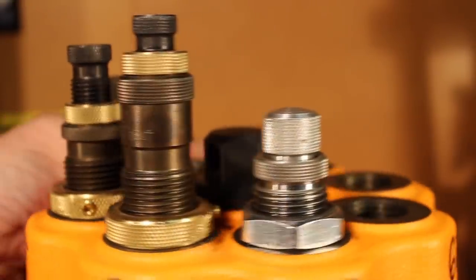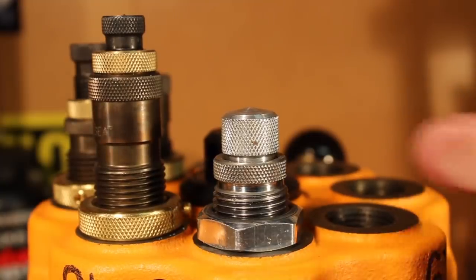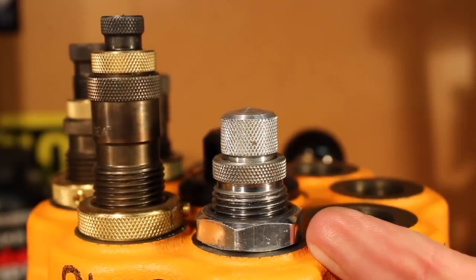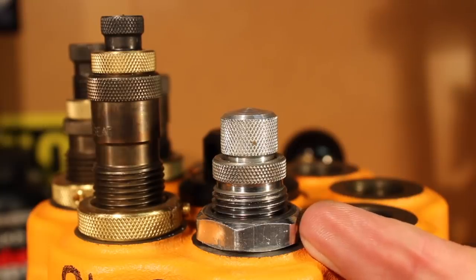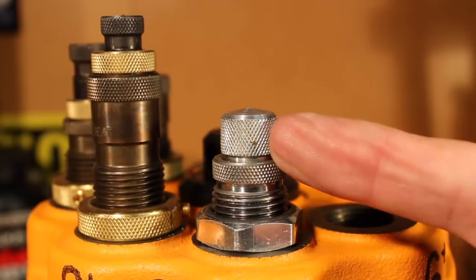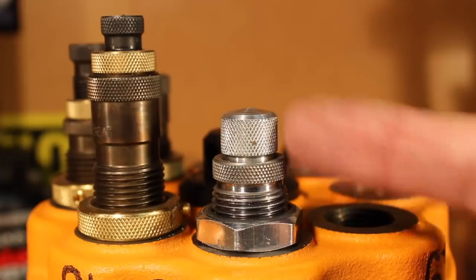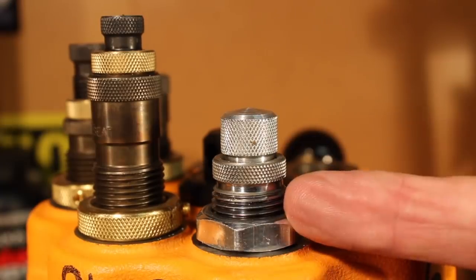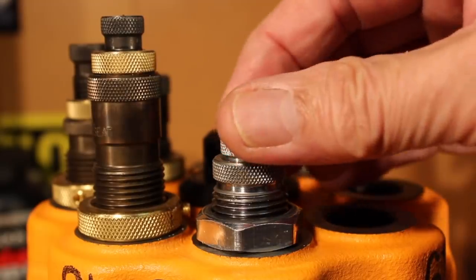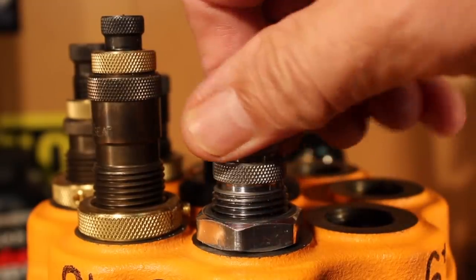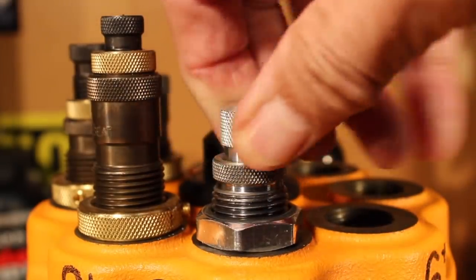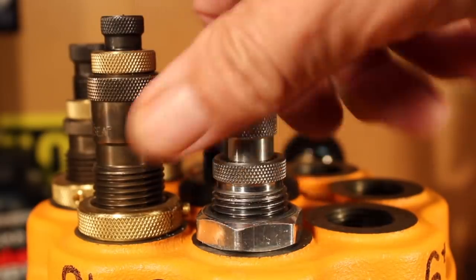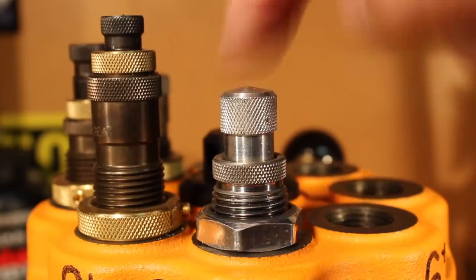Finally, we crank over our Lee factory crimp die for the .38 .357 Magnum caliber. And so this needs to be adjusted to get the right crimp. The die is already touching the shell holder so that's perfect. We just need to back out this crimping stem so that we don't over crimp the first one. And then we adjust it to get the crimp we want.